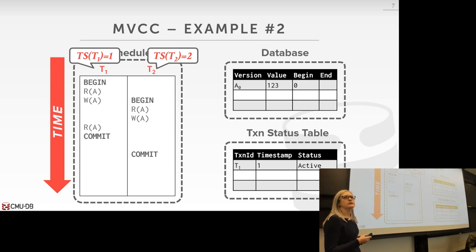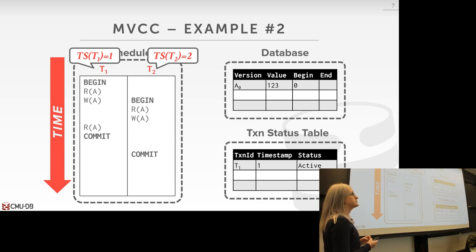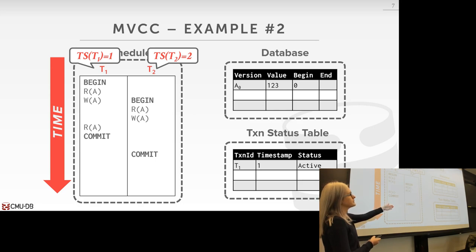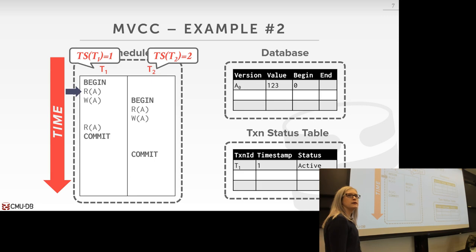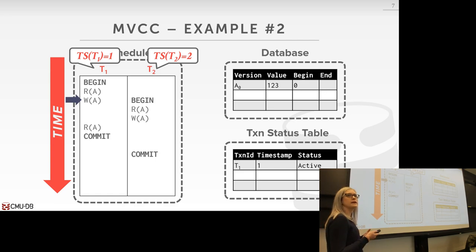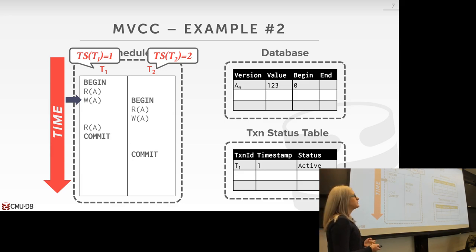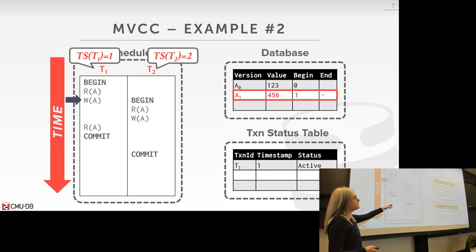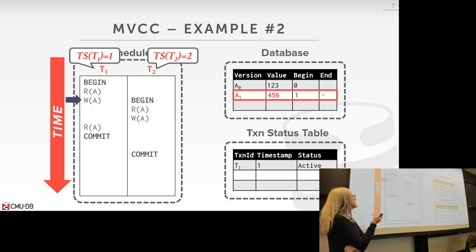In the second example, T1 has timestamp 1 and T2 has timestamp 2, same initial database state. T1 first reads A — it's clear we read version A0. Then T1 writes A, creating a new version A1 with value 4, 5, 6. The begin timestamp is 1, end is infinity. We also update A0's end timestamp to 1.